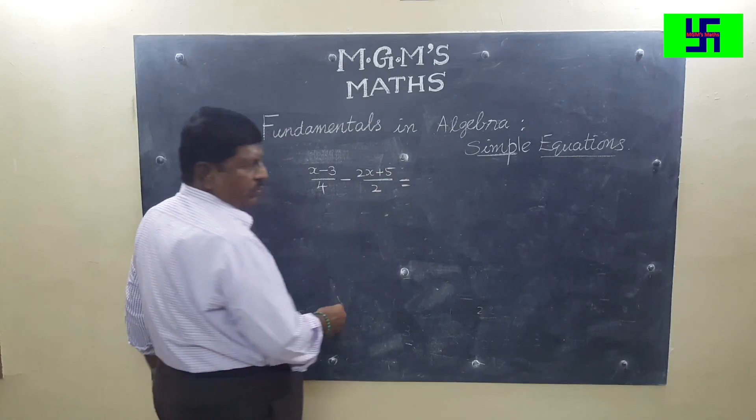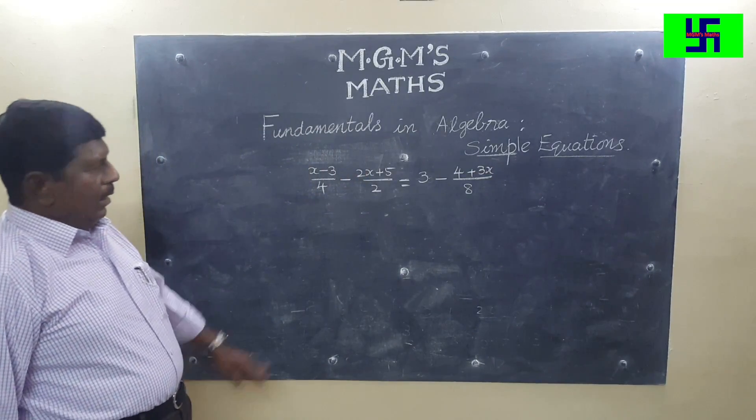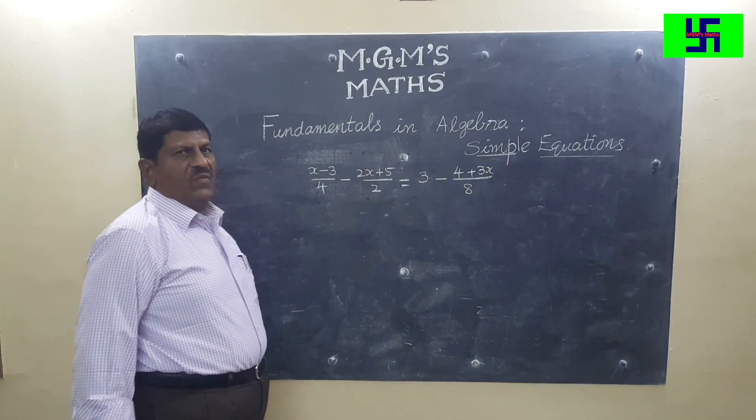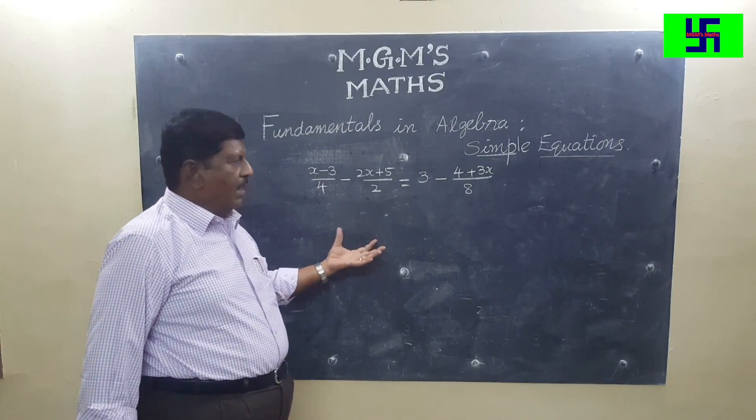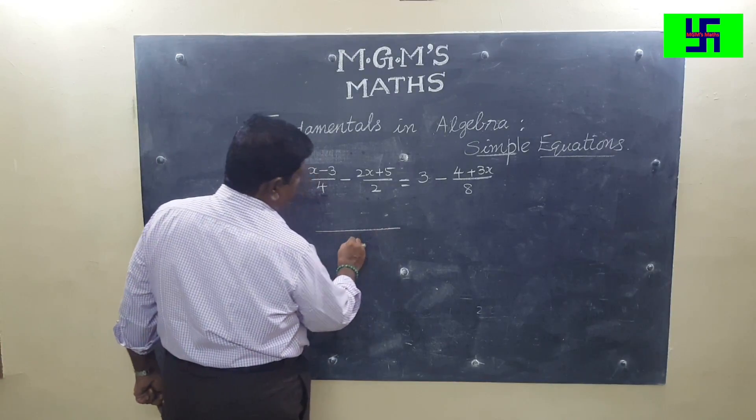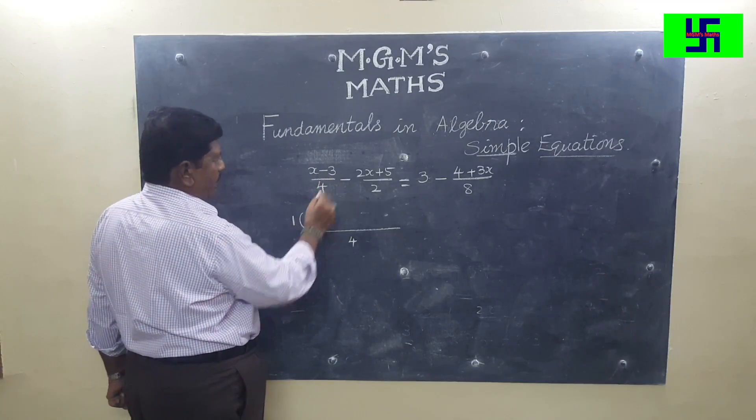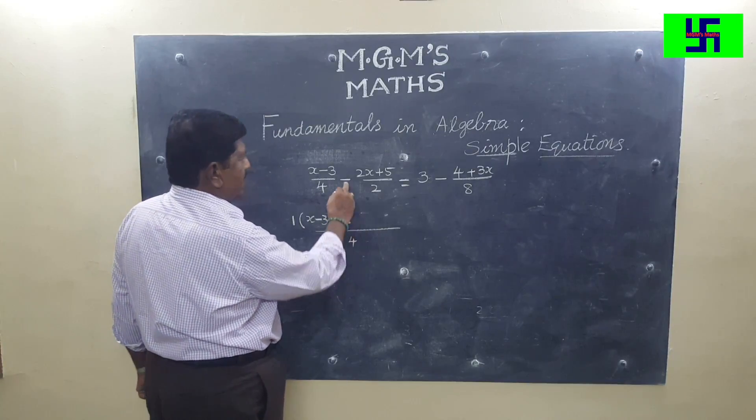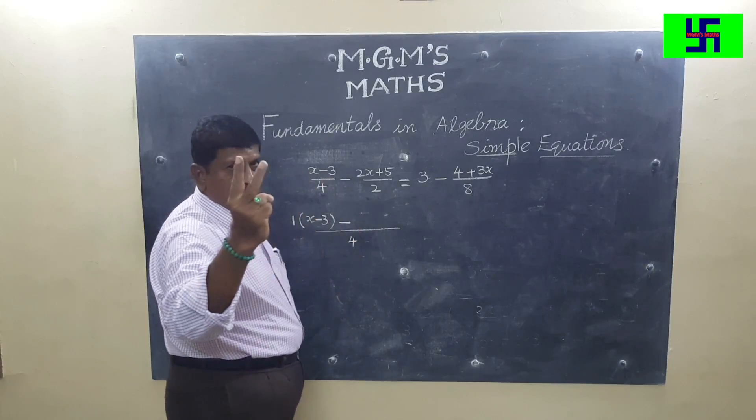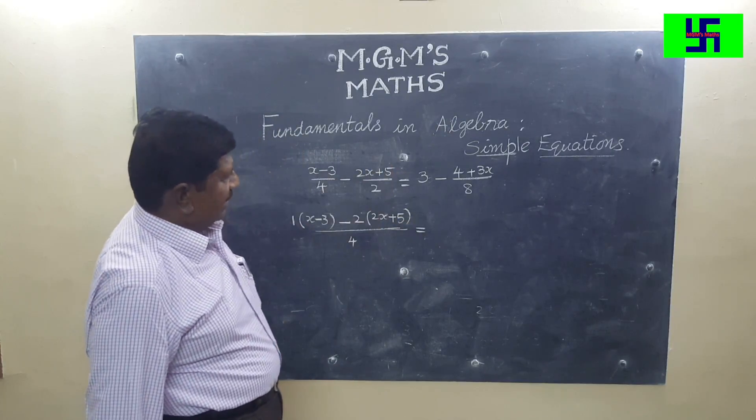Now let us see a very difficult sum where we often get confused. First of all, you see on the left hand side you have 2 fractions, right hand side again 2 fractions. Conveniently, take the LCM for left hand side separately and LCM for right hand side separately. What is LCM for 4 and 2? LCM is 4. In 4, 4 can be divided 1 time, so 1 into x minus 3. Write minus sign. In 4, 2 can be divided 2 times. In 4, 2 goes 2 times, so 2 into 2x plus 5.